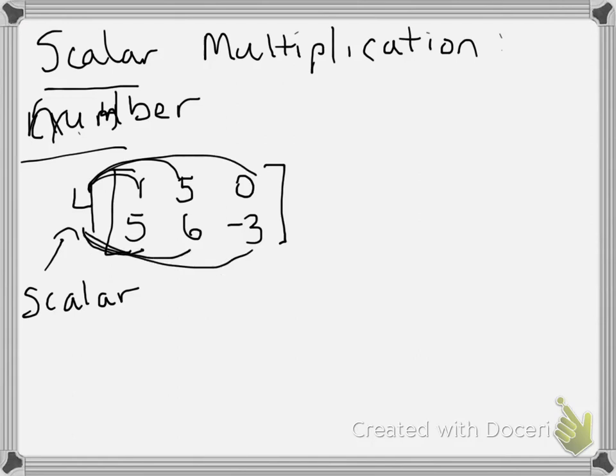So 4 times 1 is 4. 5 times 4 is 20. 4 times 0 is 0. 4 times 5 is 20. 4 times 6 is 24. And 4 times negative 3 is negative 12. That's all there is to it for scalar multiplication. We'll look at one more example and then I think you can do the rest on your own.